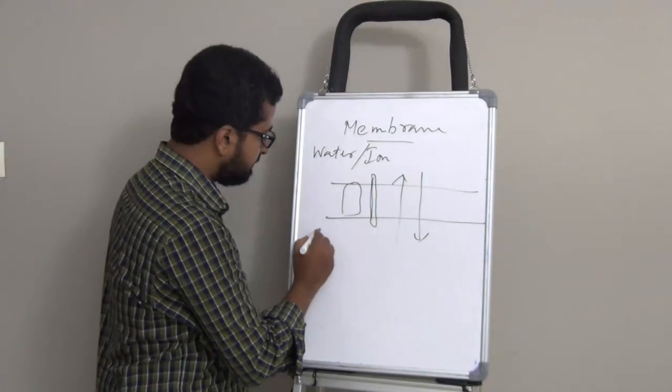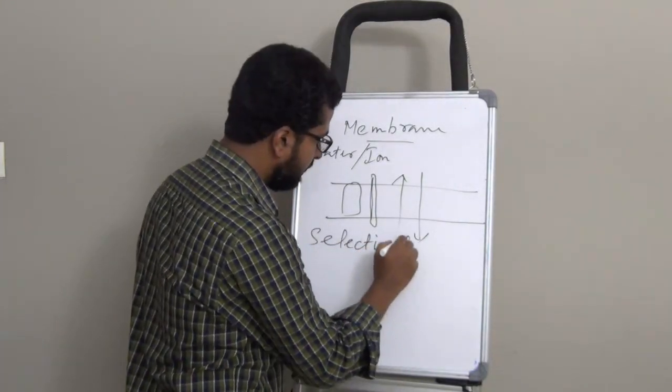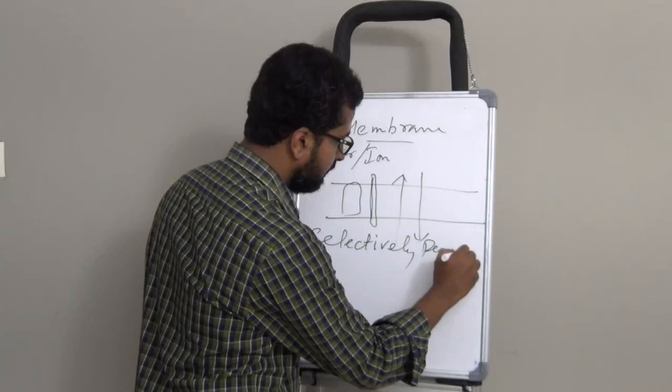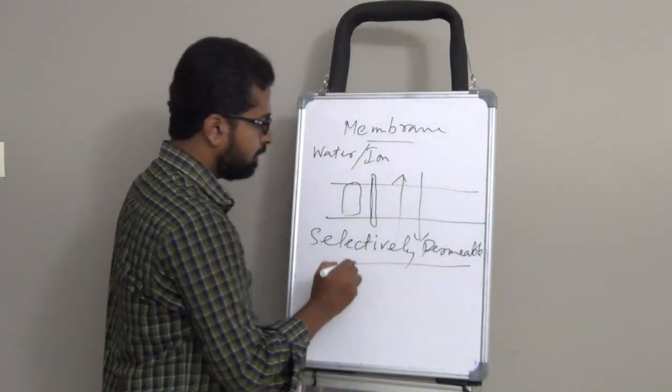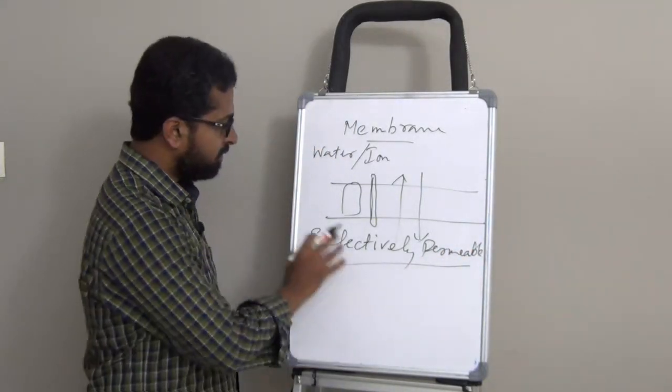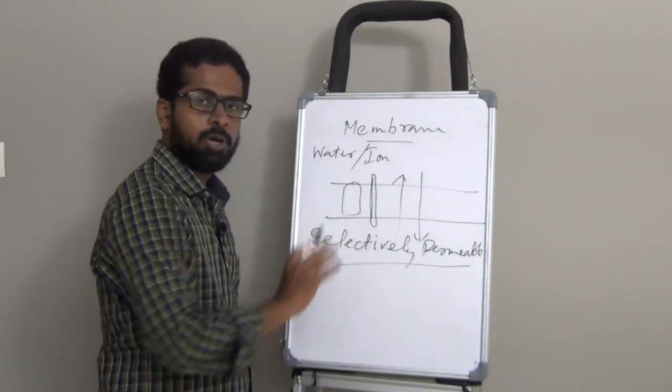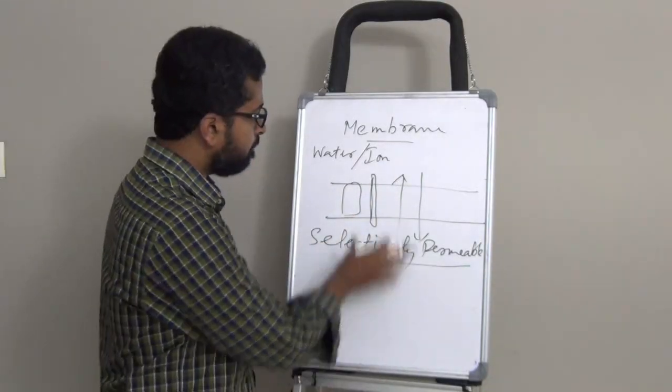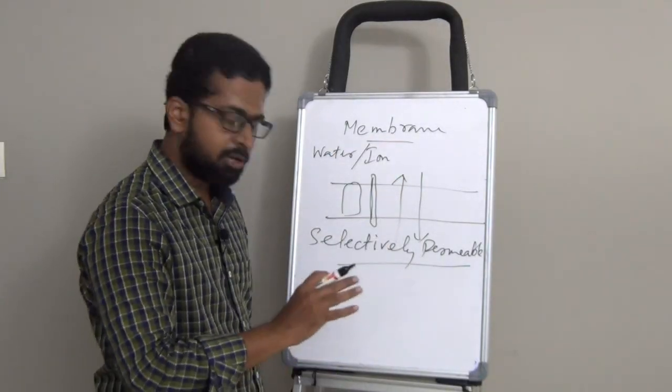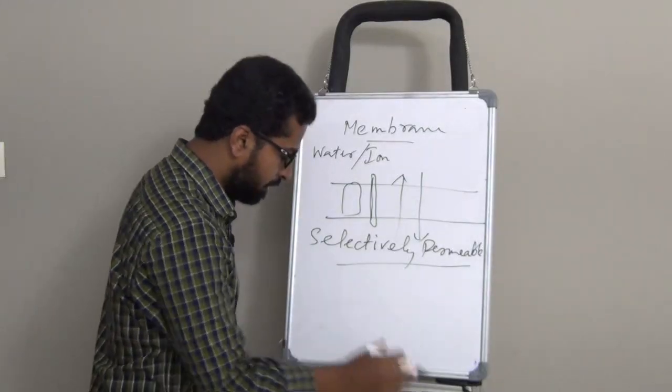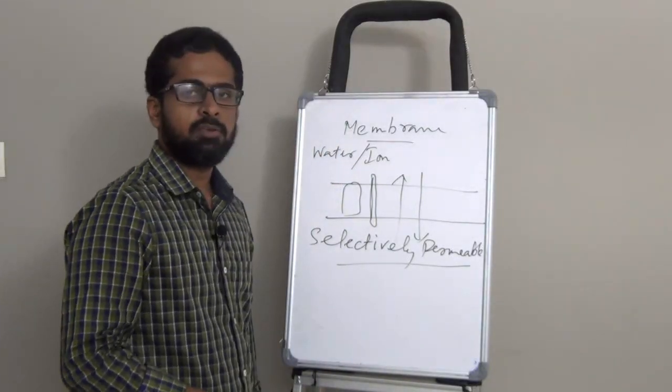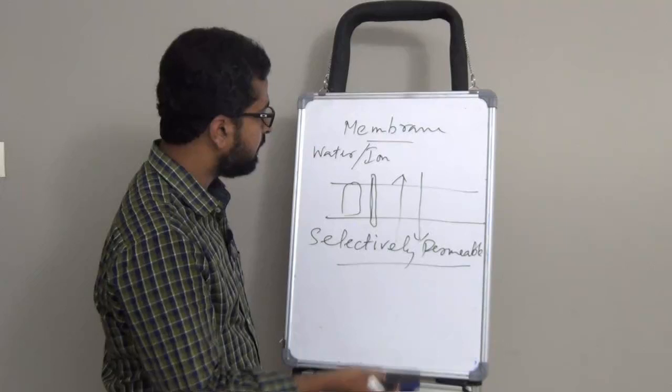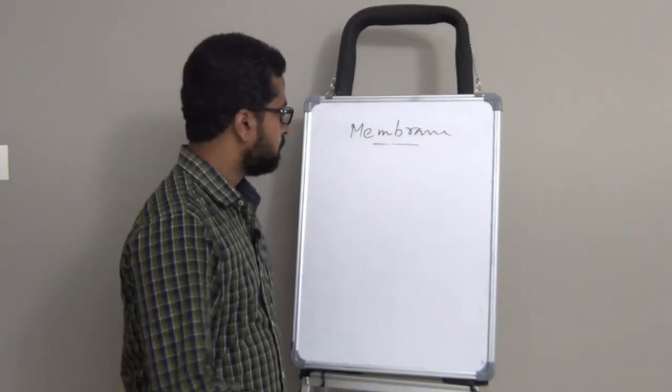Membrane is selectively permeable in nature. Because of this selective permeability, membrane maintains and regulates the transport effectively and efficiently, thereby maintaining the differences in the composition inside and outside the cell.